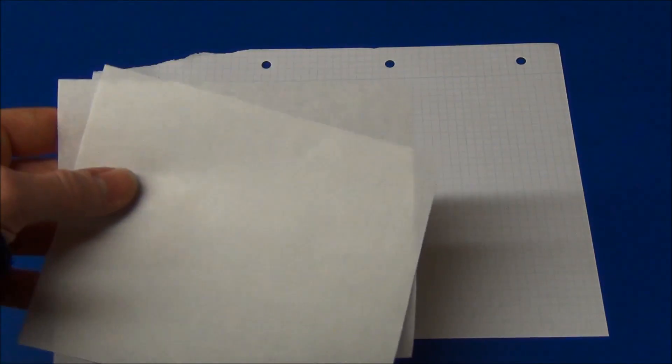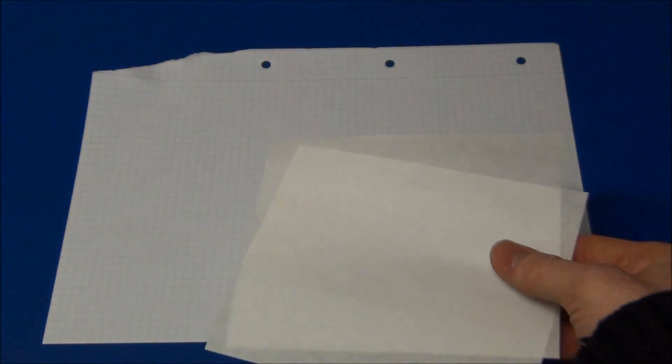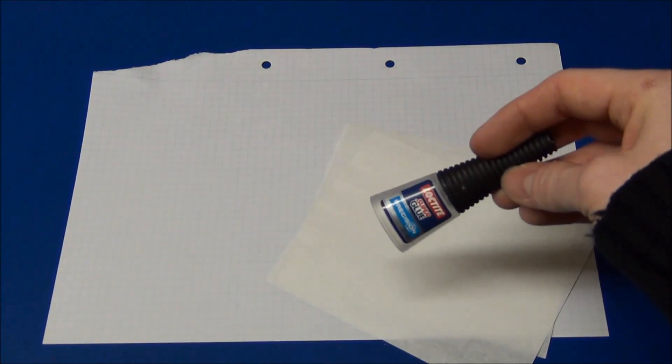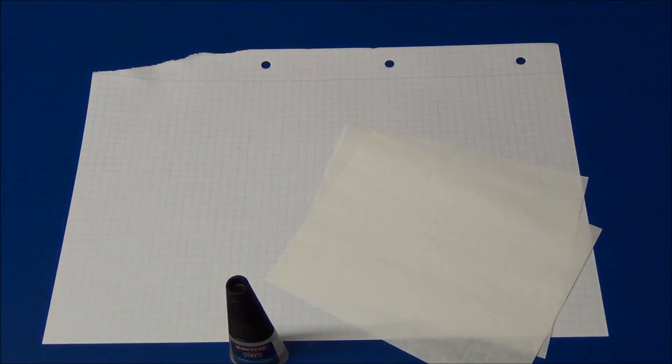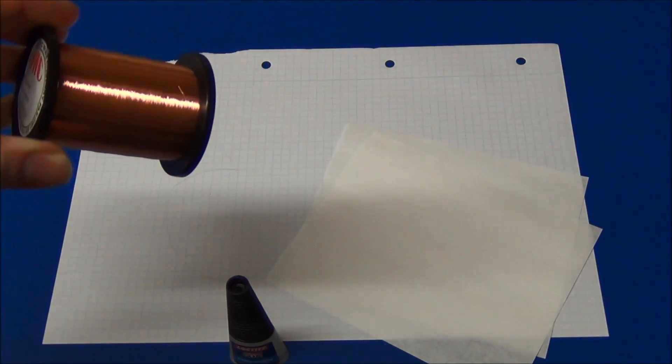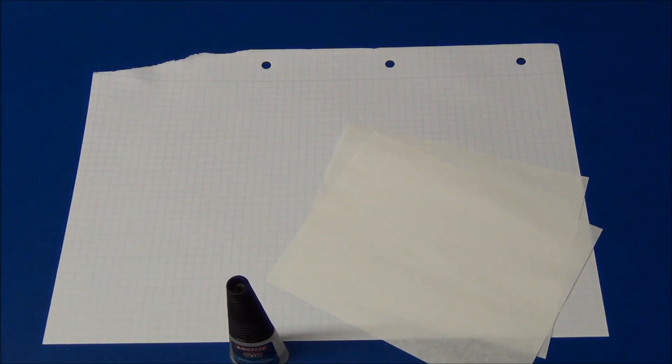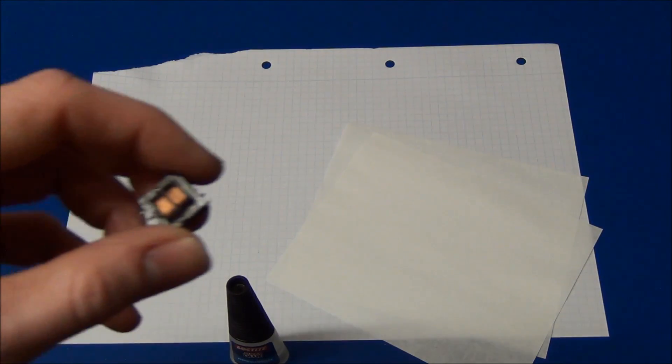We'll need a regular piece of paper, some very thin paper. This is used for wrapping around food. Super glue. A piece of cardboard. We will need some copper wire. The finer the better. And this has to be enameled copper wire.